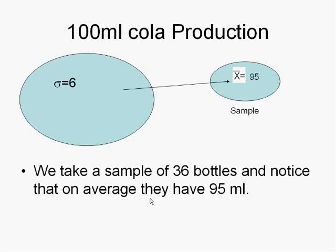Let's talk about confidence intervals. Assume that we have a production factory that produces 100 milliliter cola soft drinks, and we want to know what is the average milliliter in every bottle in the population of bottles produced in this factory. Let's assume that we already know that the standard deviation of the production is 6 milliliters.